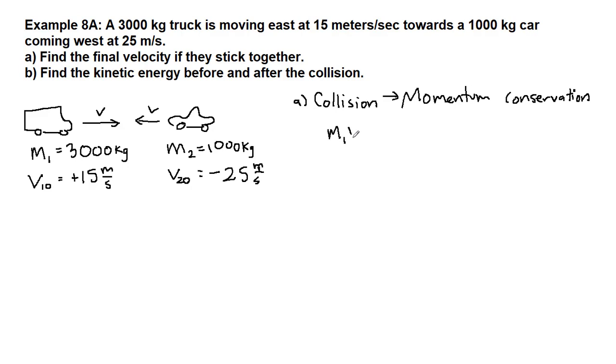So it's m1 times v1 initial plus m2 times v2 initial equals m1 v1 final plus m2 v2 final. The idea is if we have two different objects, the momentum from each object at the beginning will be equal to the total momentum of each object at the end.